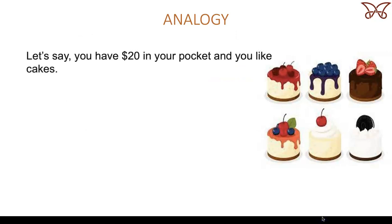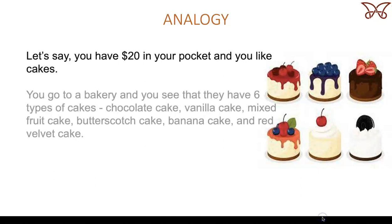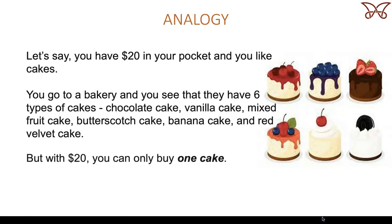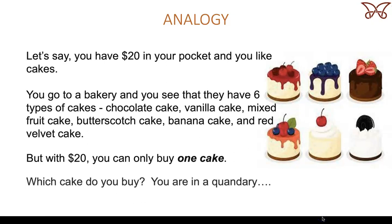Let's try and understand using an analogy. Say you have $20 in your pocket and you like cakes. You go to a bakery and you see that they have six types of cakes: chocolate cake, vanilla cake, mixed fruit cake, butterscotch cake, banana cake, and red velvet cake. But with $20, you can only buy one cake. Which cake do you buy? You are in a quandary.